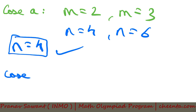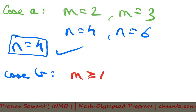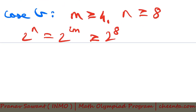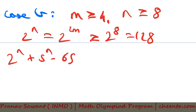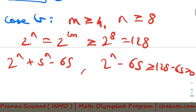Now we come to Case B, which is really where the crux of the problem is. Case B is m ≥ 4, and since n = 2m, n has to be greater than or equal to 8. I can write 2^n as 2^(2m), and that will be greater than or equal to 2^8 = 128. Now if I consider just 2^n − 65, will it be greater than 0 for n ≥ 8? Of course it will — it's going to be ≥ 128 − 65, which is obviously greater than 0.